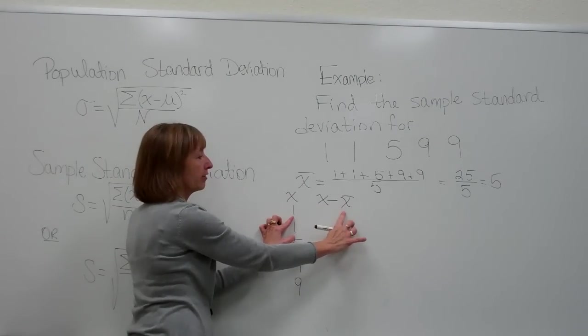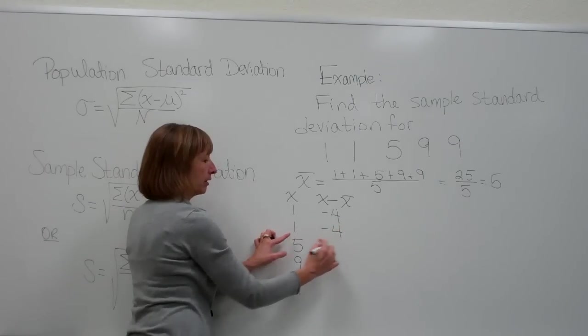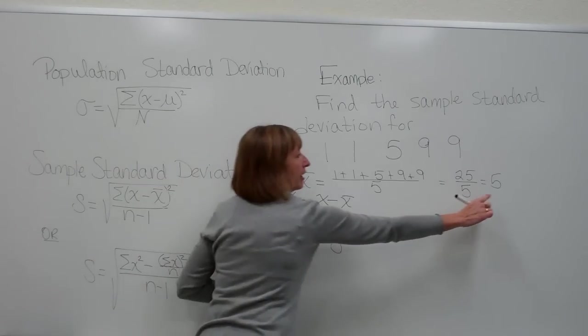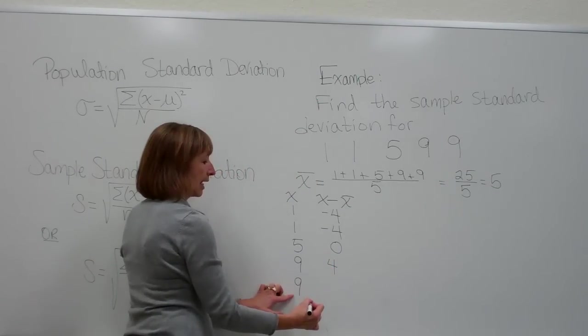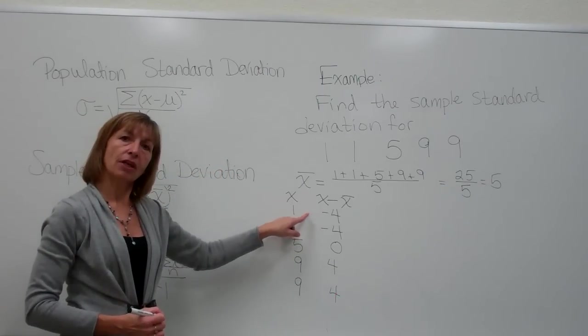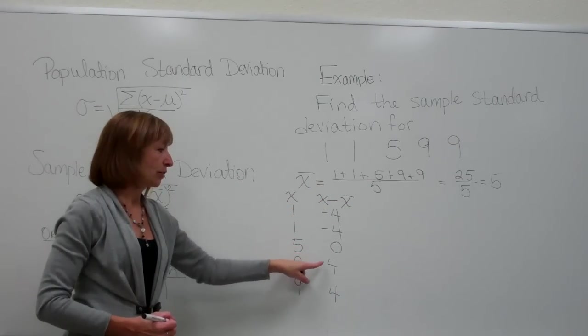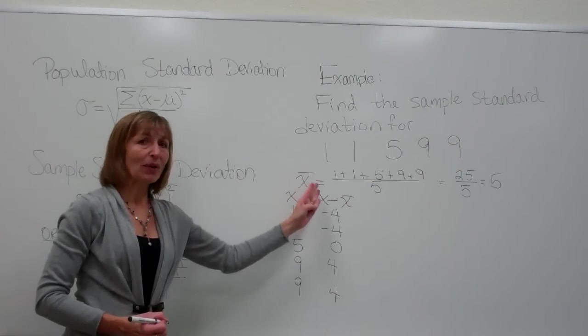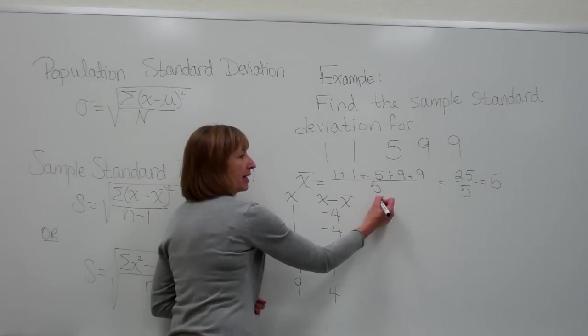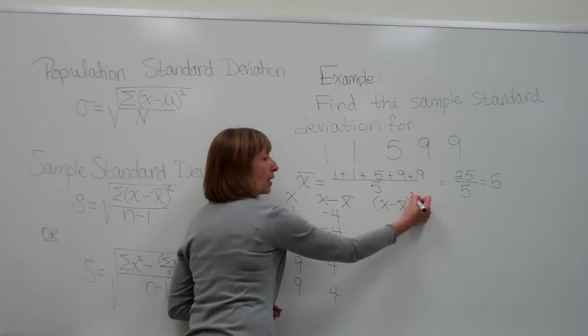So 1 subtract 5 would be negative 4. 1 subtract 5 is negative 4. 5 subtract 5 is 0. 9 subtract 5 is 4. And 9 subtract 5 is 4. So notice that data values that are below the mean have a negative difference, and data values that are above the mean have a positive difference. So I can't really add them up at this stage, or it would just give me a 0 value. So that comes in the next stage where I take that answer I got in the column that we just finished, and I'm going to square those numbers.